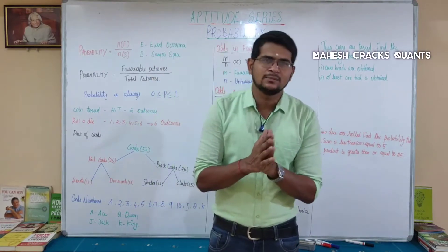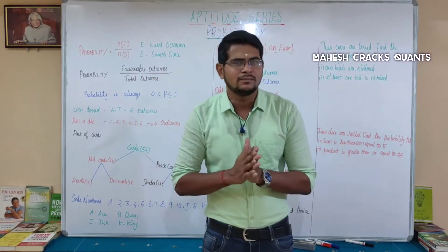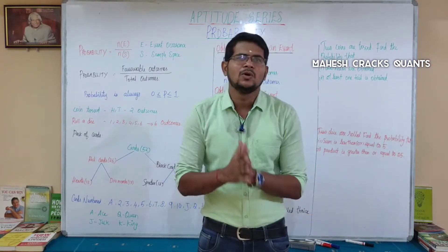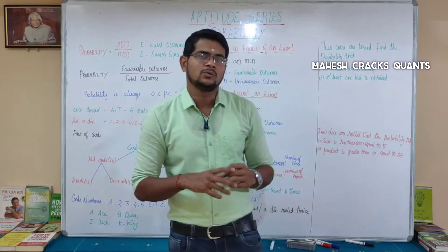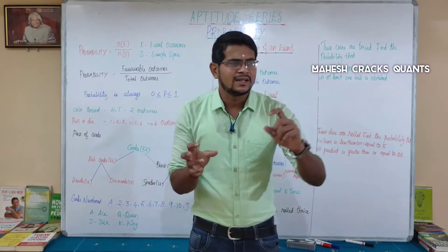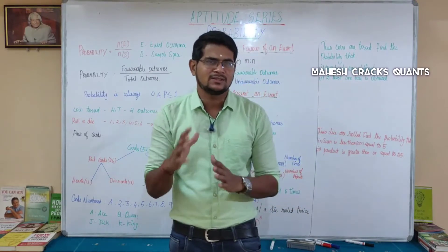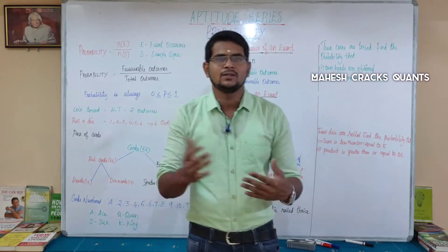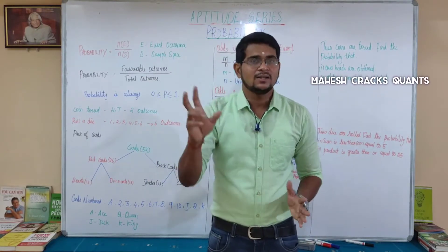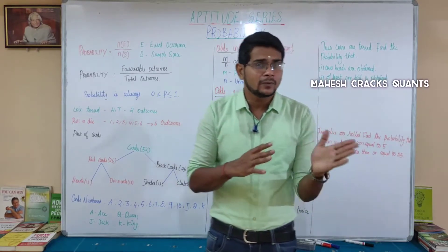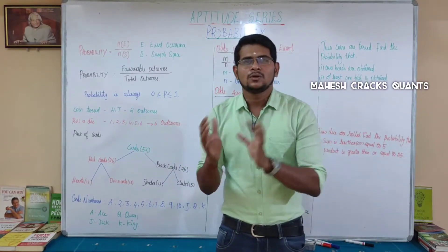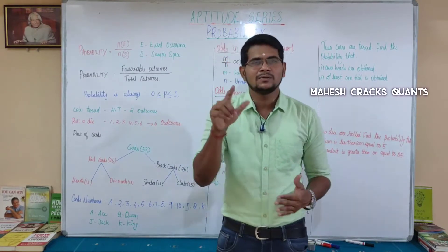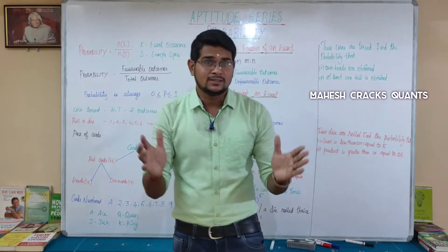Here is an example. There is a bus stand with 50 buses. There are 20 buses going to the place I need. So the favorable outcome is 20 and total outcome is 50. The probability is 20 by 50, which equals 2 by 5.